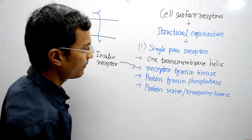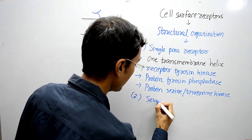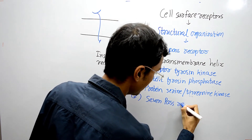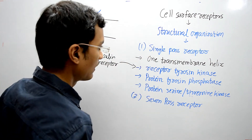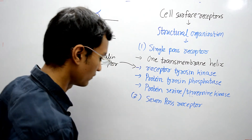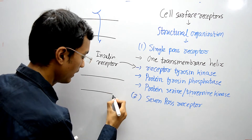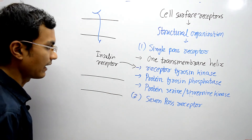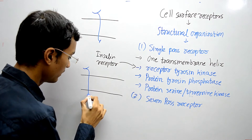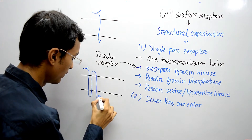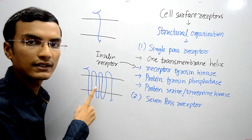The next type is the 7-pass receptor. In this type, there are 7 transmembrane helixes. For example, this is the cell membrane and the receptor has 7 transmembrane helixes — 1st, 2nd, 3rd, 4th, 5th, 6th, and 7th. This is called a 7-pass receptor.